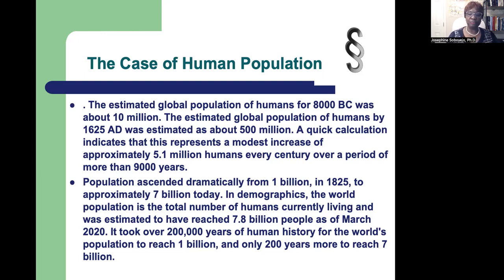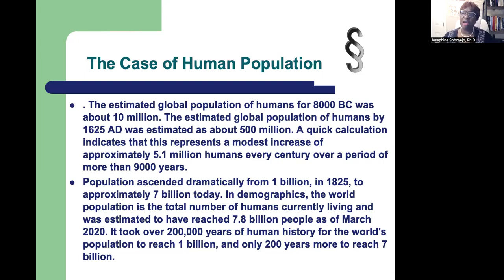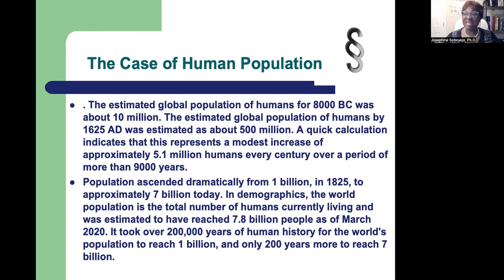Now wait and see what is happening right now. Population dramatically ascended from 1 billion in 1825 to approximately 7 billion as of 2020. Today we have almost close to 9 billion — rough estimate for April 2022. This shows that it took over 200,000 years of human history for the world population to reach 1 billion, and only 200 years more to reach 7 billion as of 2020.